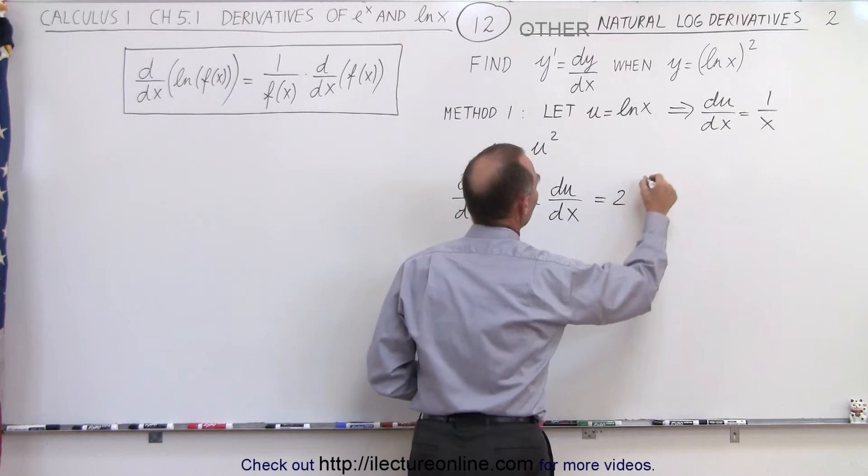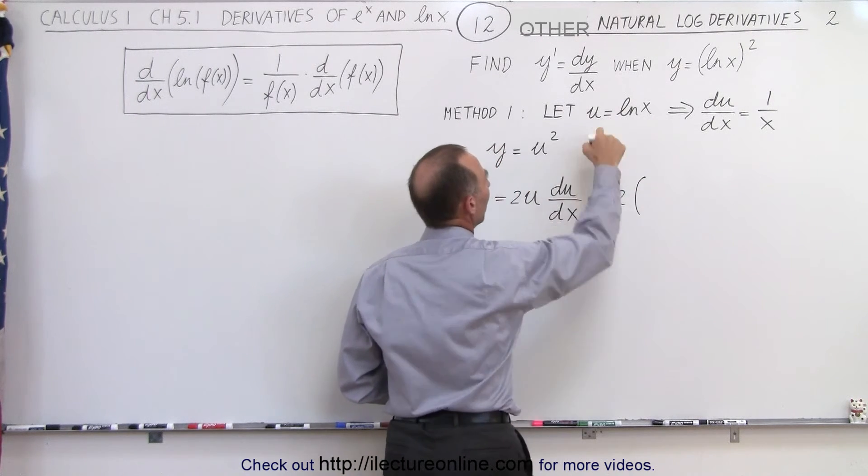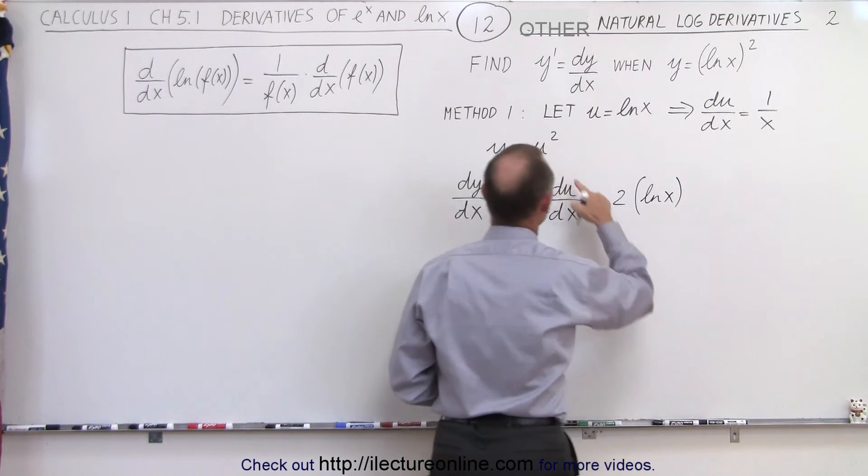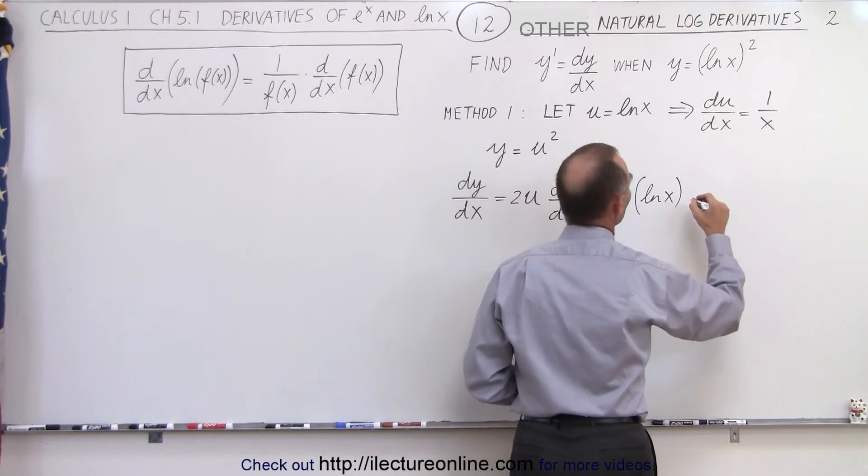So this becomes equal to 2 times, instead of u, we're going to write the natural log of x. And instead of du dx, we're going to write 1 over x.